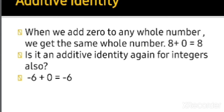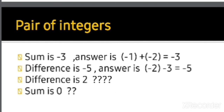Now, pair of integers: when the sum of two integers is minus 3, what pairs work? We know 1 plus 2 equals 3, so for minus 3 we use minus 1 and minus 2. Since they have the same sign, we add them and take the sign of the greater number, giving minus 3.